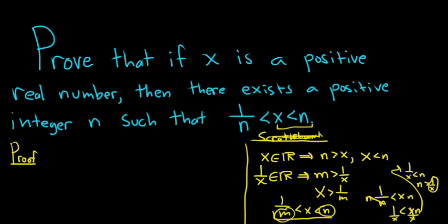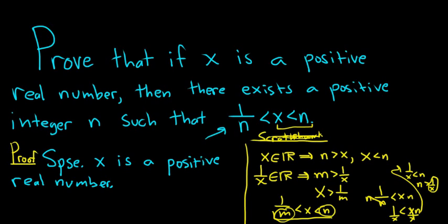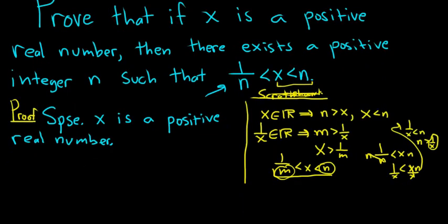It says prove that if x is a positive real number. So that's our hypothesis. We start by writing down, suppose x is a positive real number. And the goal is to create this inequality. Now we can use the Archimedean property on x. Since x is an element in the set of real numbers,